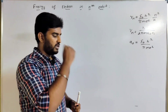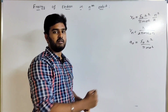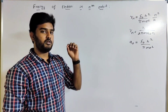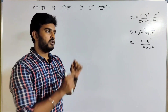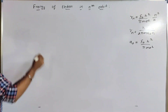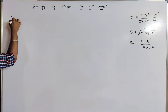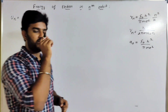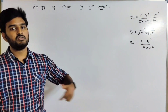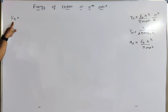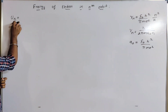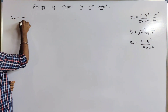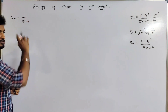We will consider the electron in a circular orbit. If the electron moves in a circular orbit, it experiences a Coulomb force of attraction. So we will find the potential energy of the electron in the nth orbit, which is related to the Coulomb force of attraction.